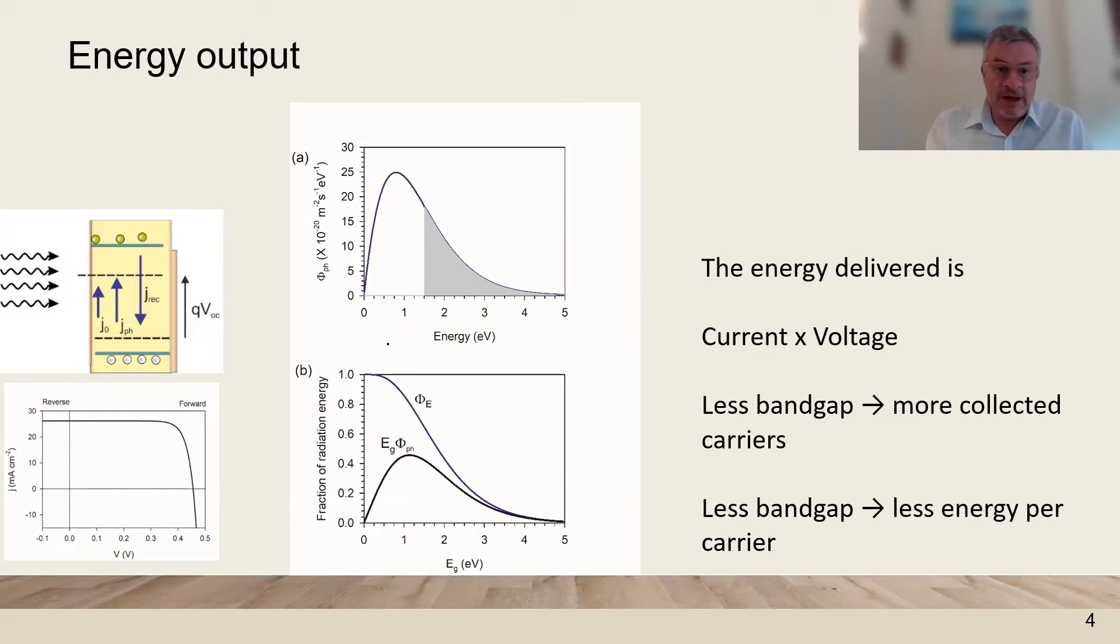So the voltage is large at large band gap, and the current is large at low band gap. So we will have this basic structure of the possible efficiencies as a function only of the band gap.